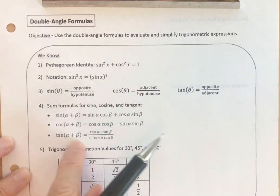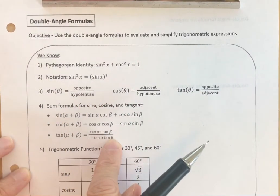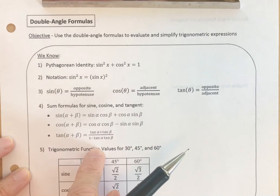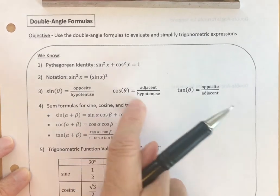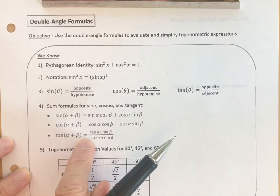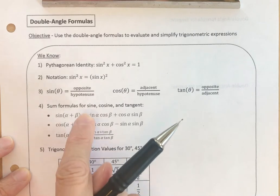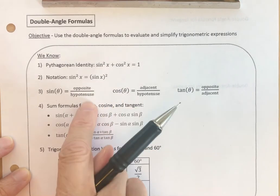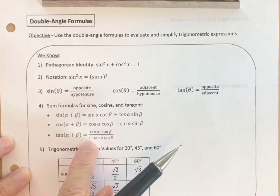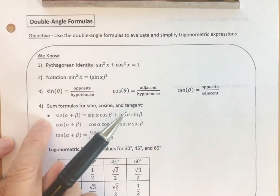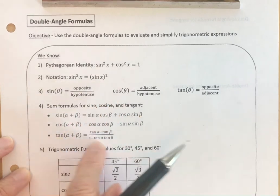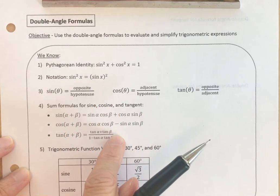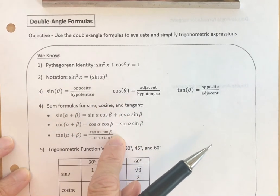We recently derived, or in some cases listed, the sum formulas for sine, cosine, and tangent. We're going to make use of these to derive the double angle formulas.